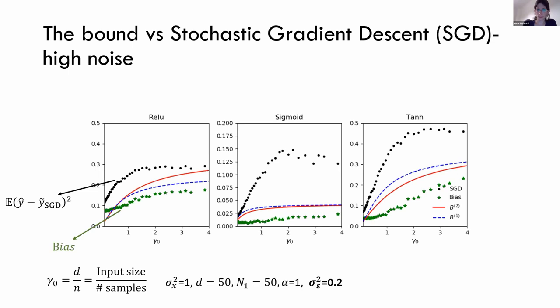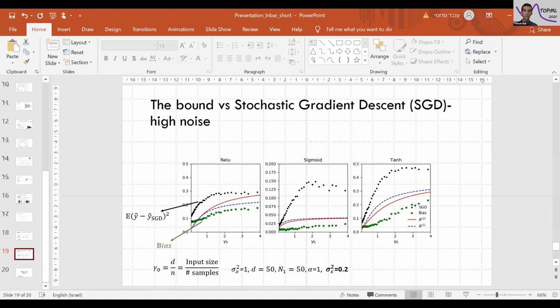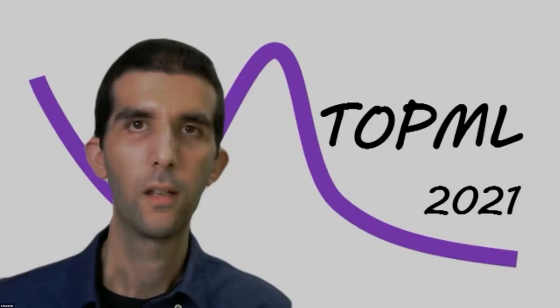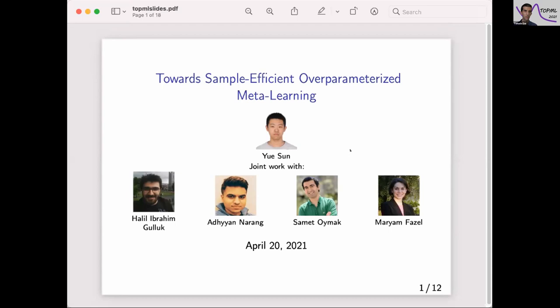The next lightning talk is by Yasun from the University of Washington on towards simple, efficient over-parameterized meta learning. Yasun introduced meta learning as a two-step process: first, representation learning on a large dataset with many tasks where both features and labels are observable, training a large model accurately. Second, future (new task) learning on a small dataset where the model is over-parameterized but empirically fine-tuning works well.